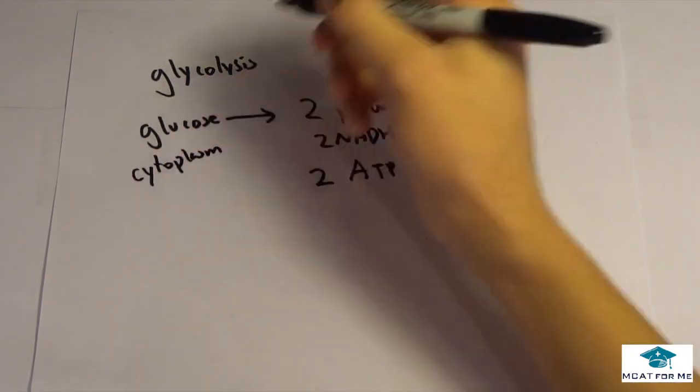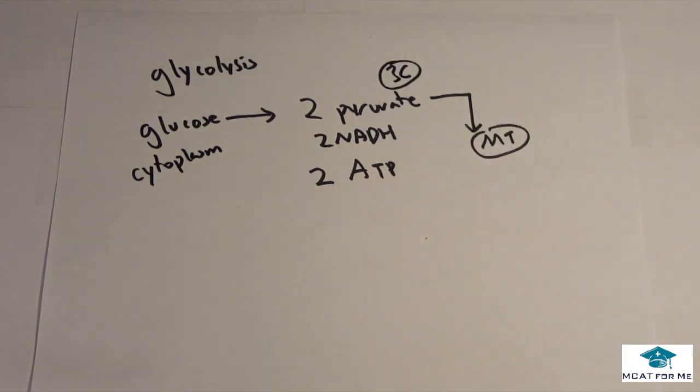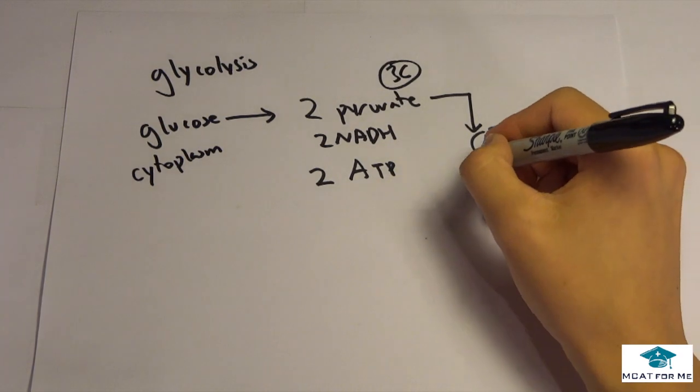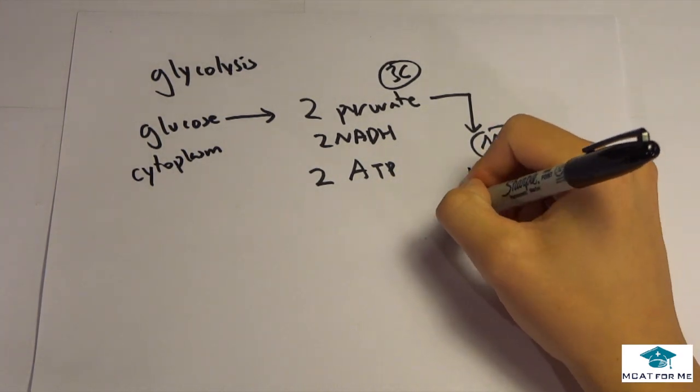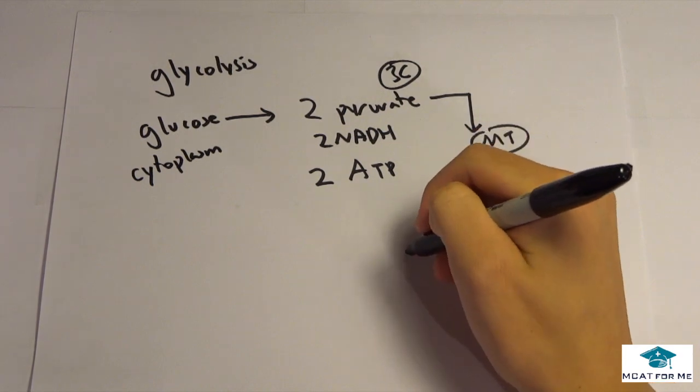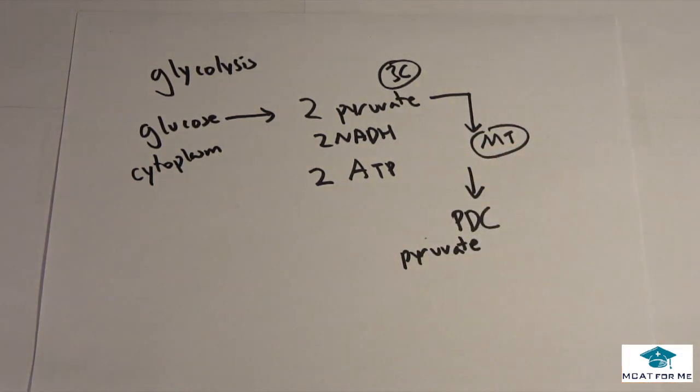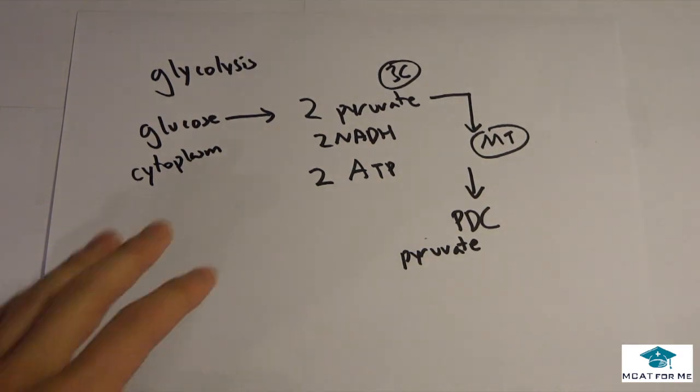So this pyruvate which is three carbons is going to be shuttled into the mitochondria through a transport system and it will be going to the mitochondria and now into the PDC. So we have right here the two pyruvates that are now in the PDC in the mitochondria.